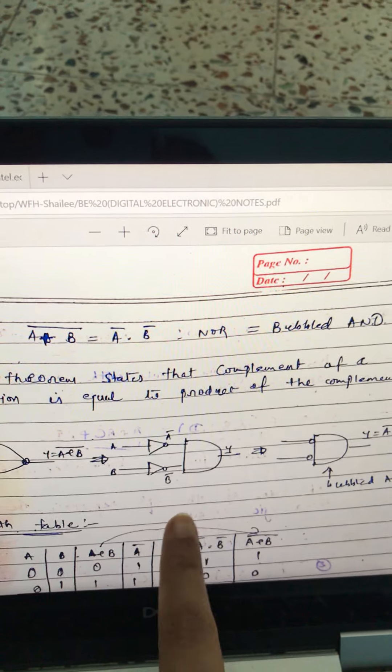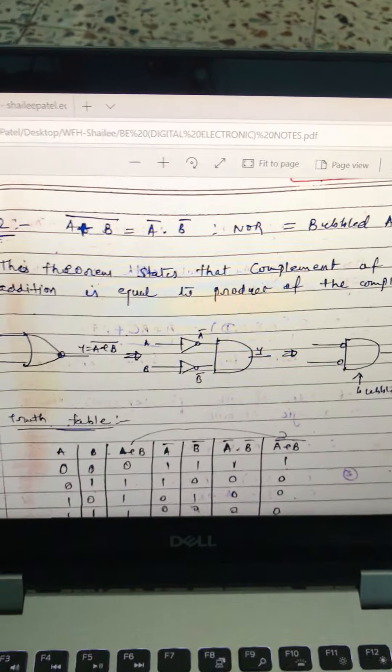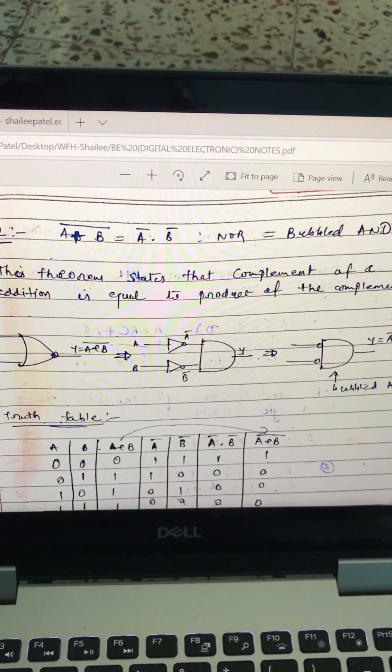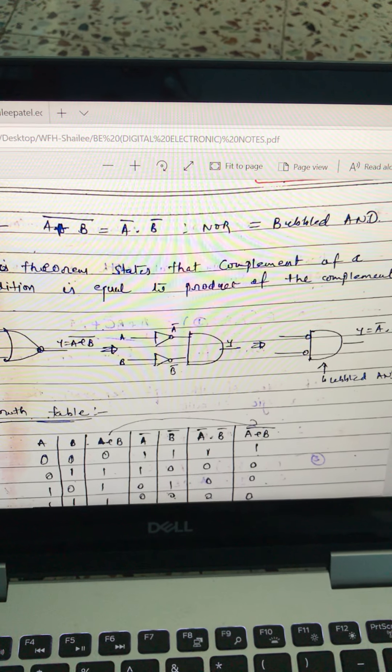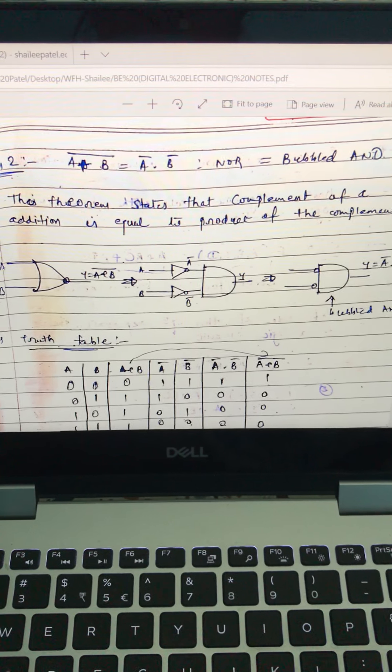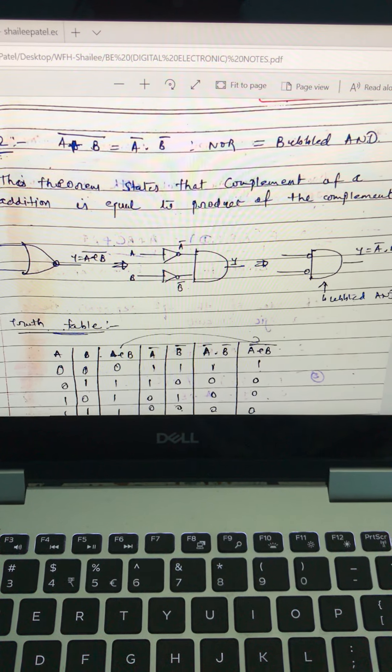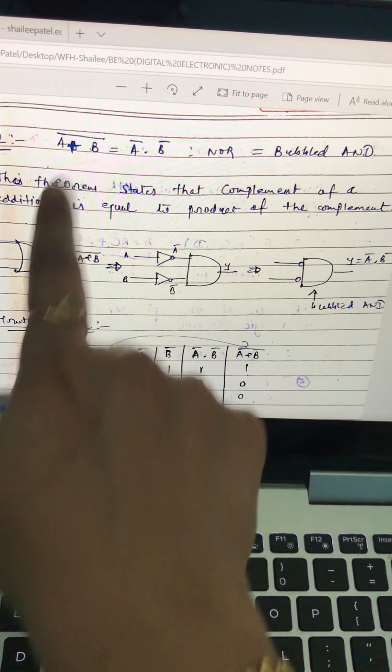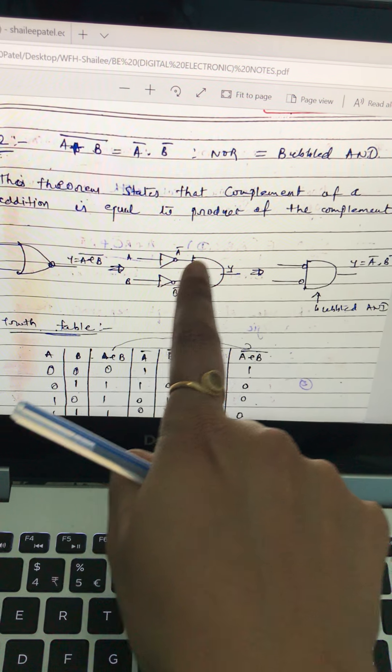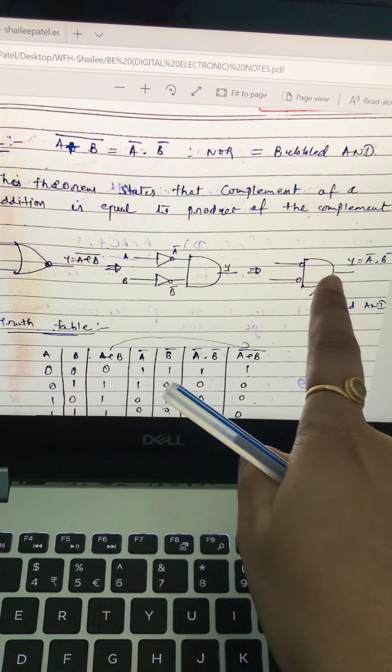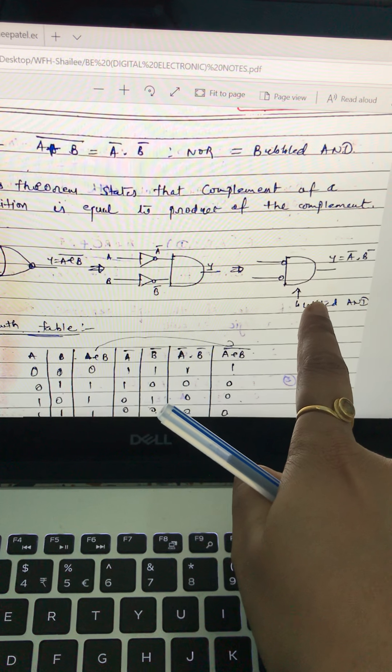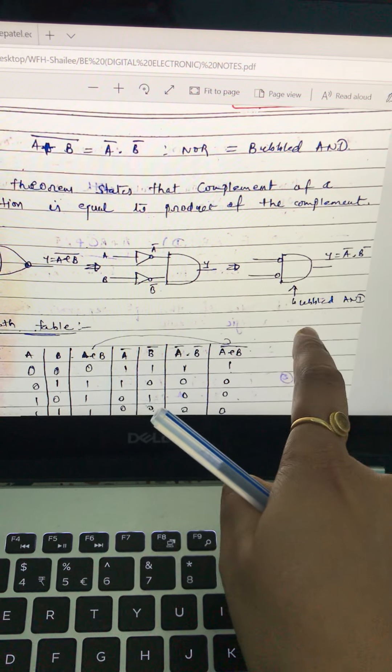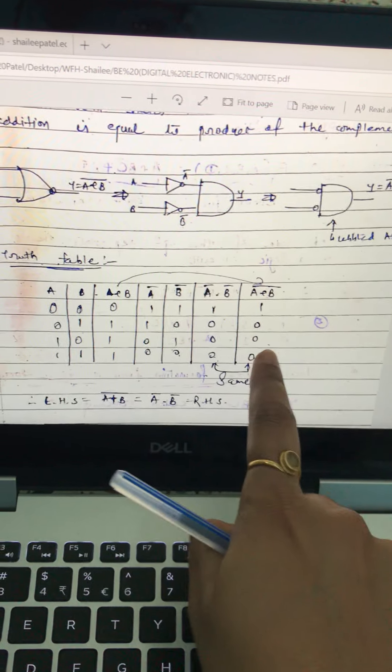As well as theorem two states the same thing. Complement of addition is equal to product of complement. So let's go for it. A plus B bar equals A bar dot B bar. Again OR for this NOT gate ending. Then you try to make bubbles here. So this is known as bubbled AND gate. NOR or bubbled AND gate.